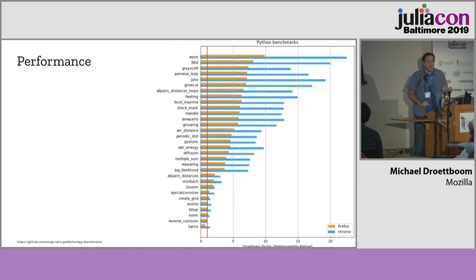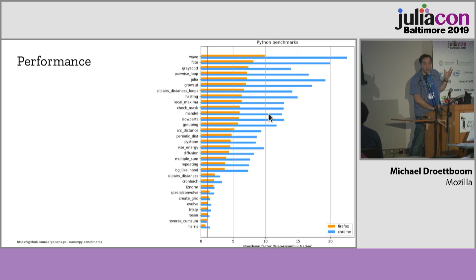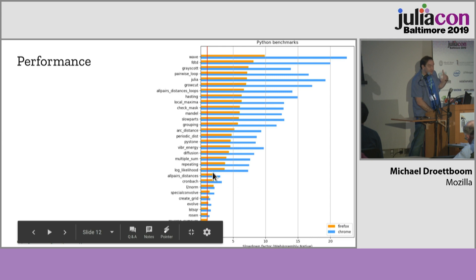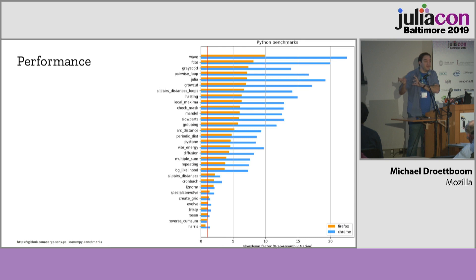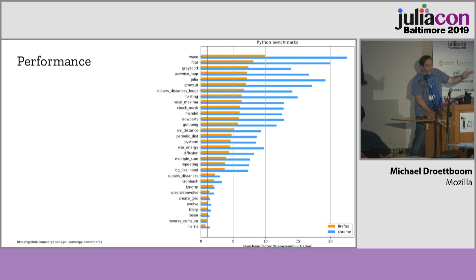We always get asked about performance. If you take this thing and put Python in the browser, how much slower is it? It turns out it's anywhere between one and ten times slower. Things that are doing tight C numerical loops are about the same speed. Things that do a lot of Pythonic, dynamic stuff are a lot slower — that's because making function pointer calls is slower in WebAssembly, something we're working on and trying to improve. But it's really not that bad. Also, Firefox is kind of ahead of Chrome on WebAssembly, and I'm not just saying that because I'm at Mozilla — the numbers just show that.